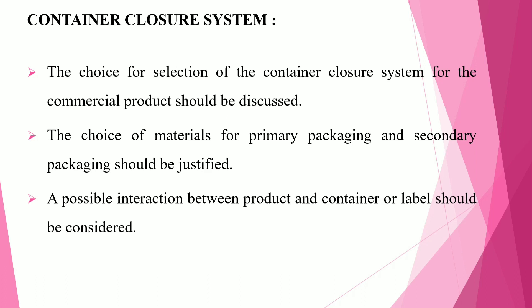The next topic is the container closure system. The choice of container closure system for the commercial product should be discussed, including which types of containers are used for packing. The choice of material for primary packaging and secondary packaging should be justified — which types of materials are going to be used and whether they are compatible with the product. A possible interaction between the product and the container or label should be considered during the planning of packaging or packaging development.